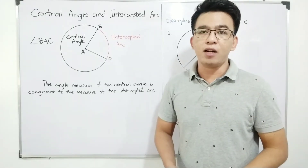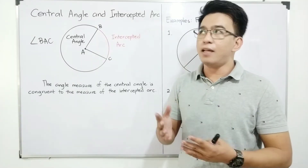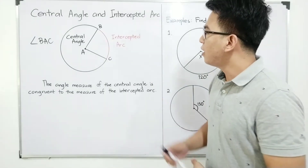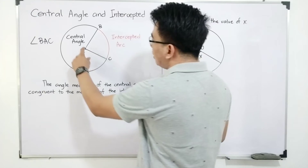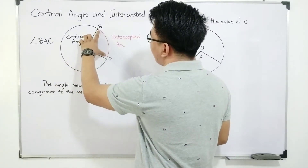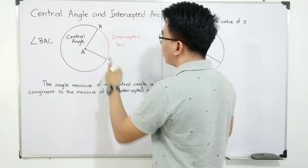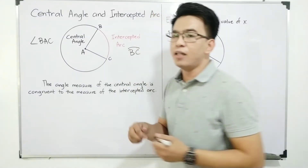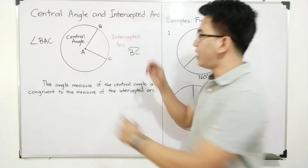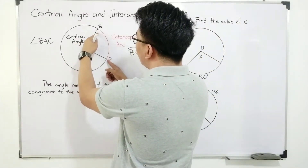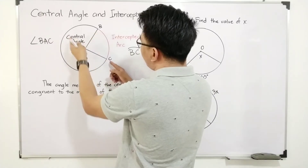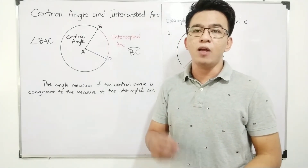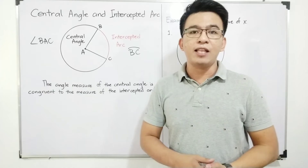So how about the intercepted arc? The intercepted arc is a portion of the circumference of a circle. And as you can see, it is called an intercepted arc because the endpoints of the central angle are here. Our intercepted arc is arc BAC, wherein the endpoints of our central angle are the starting points of our intercepted arc, which is arc BAC.